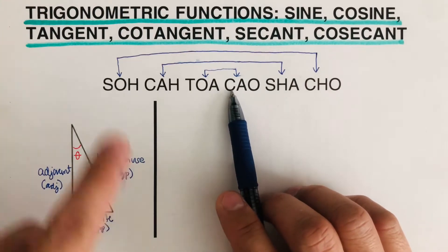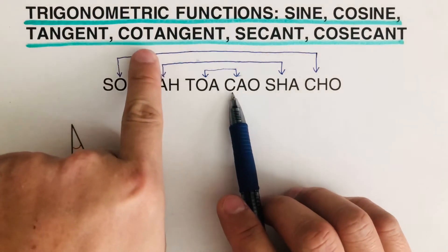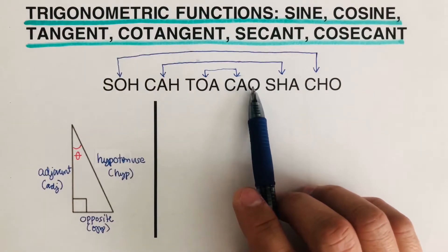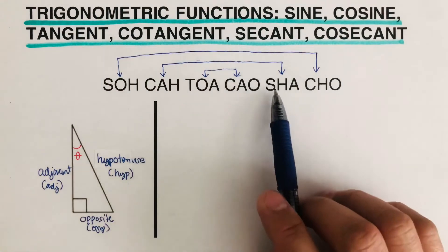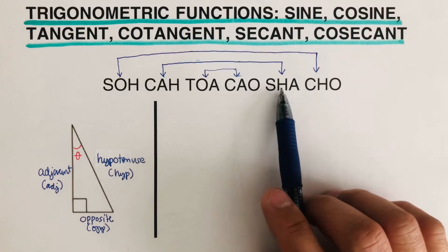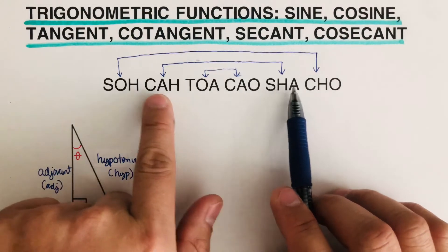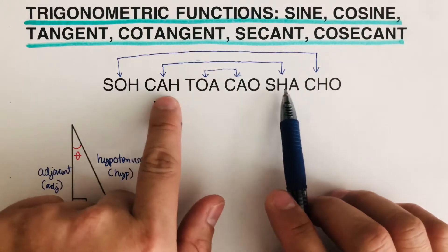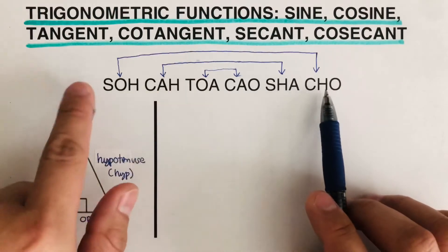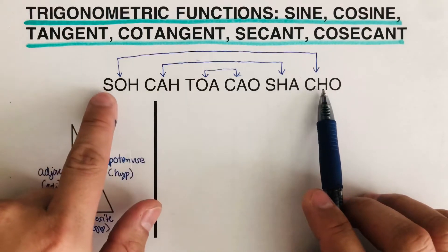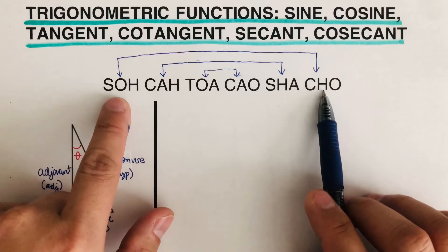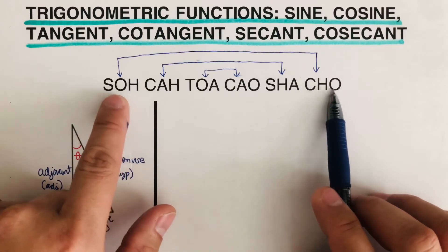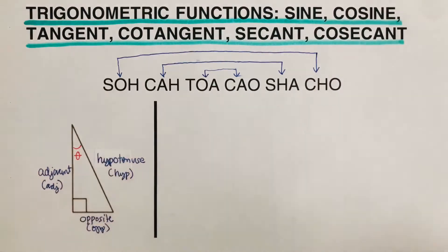Now we have the reciprocals. Cotangent is actually adjacent over opposite — as you can see these two have been flipped. Secant is equal to hypotenuse over adjacent, so these two have been switched. And cosecant is hypotenuse over opposite, which has also been switched.